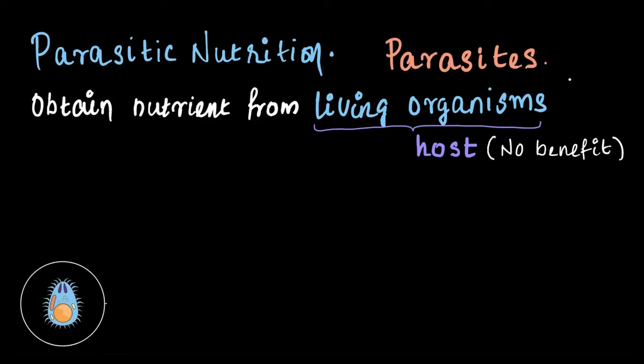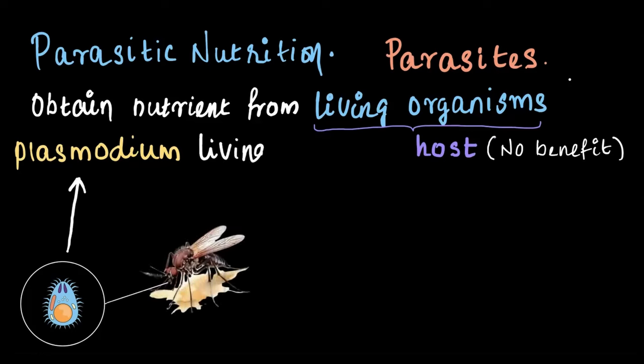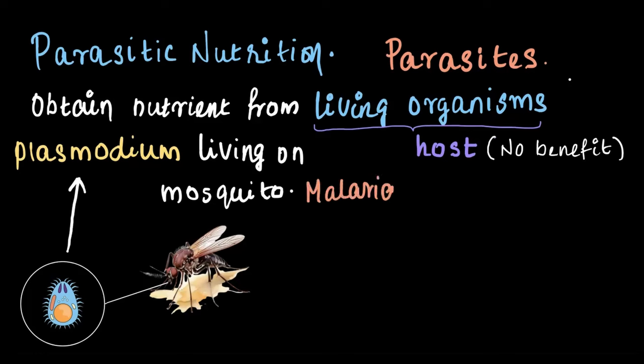Take this example: a microorganism called Plasmodium. Since Plasmodium can't produce its own food, it lives on a mosquito for free and takes nutrients from it. When the mosquito bites humans, Plasmodium is transferred to the human body and causes the disease known as malaria.